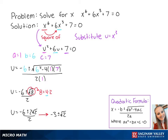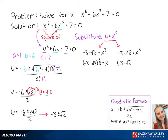Now we can plug negative 3 plus or minus the square root of 2 into the equation u equals x cubed. So first we have negative 3 plus the square root of 2 equals x cubed. Taking the 1 third power, we get x equals the cube root of negative 3 plus the square root of 2. Then plugging in negative 3 minus the square root of 2, we get x equals the cube root of negative 3 minus the square root of 2. These are the two final answers.